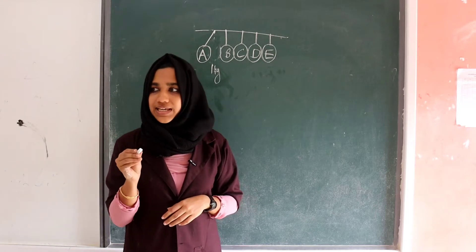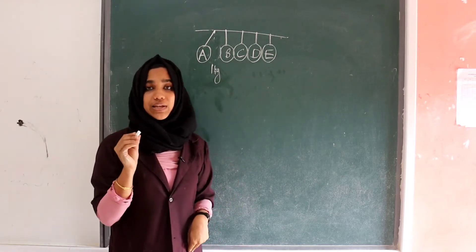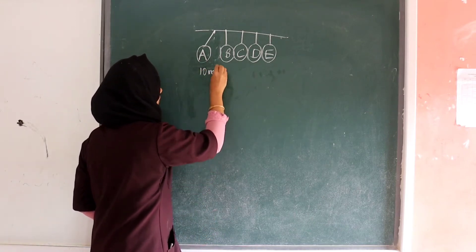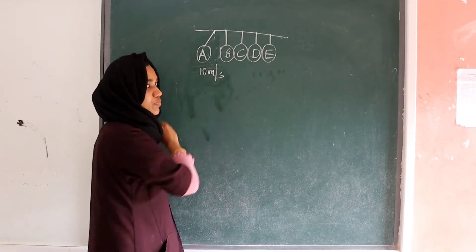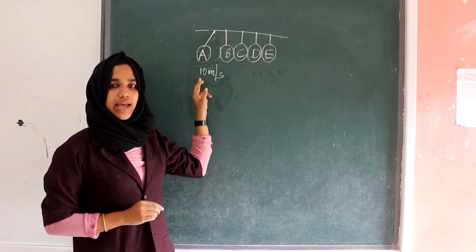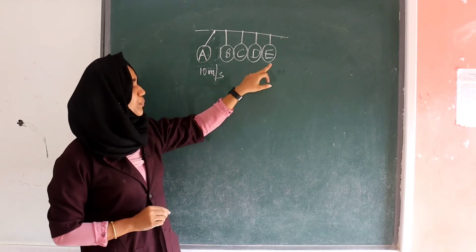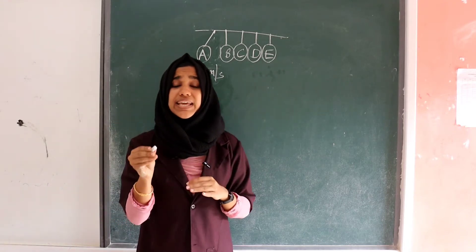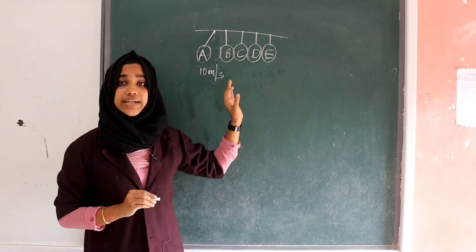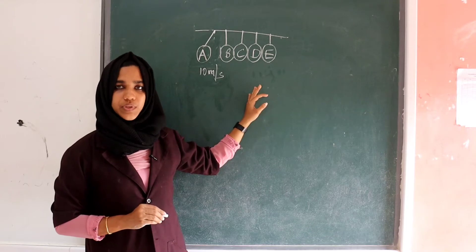Suppose ball A is moving with a velocity of 10 meters per second. When it hits, ball E will be pushed off with the same velocity — 10 meters per second.